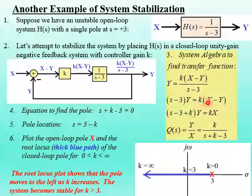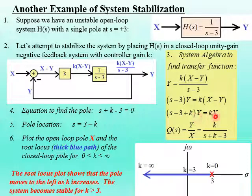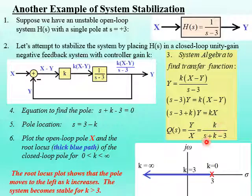On the right side we have K times X minus K times Y. Bringing that KY over to the left side and factoring out Y gives us (S minus three plus K) all times Y on the left and KX on the right. So our transfer function for the entire system, Q(s) equal to Y over X, is K over S plus K minus three.